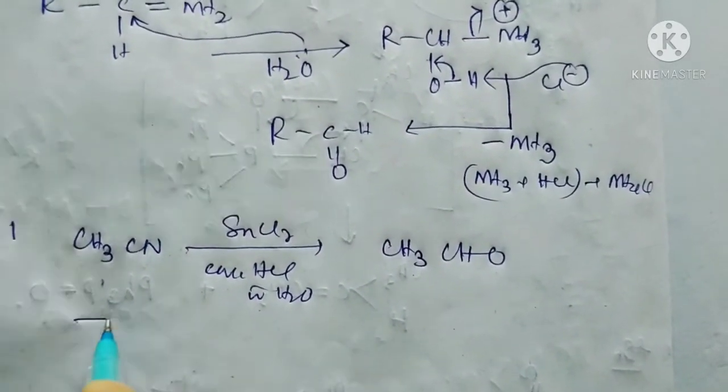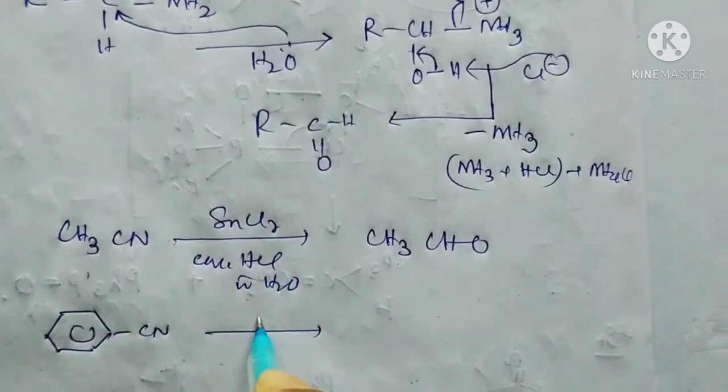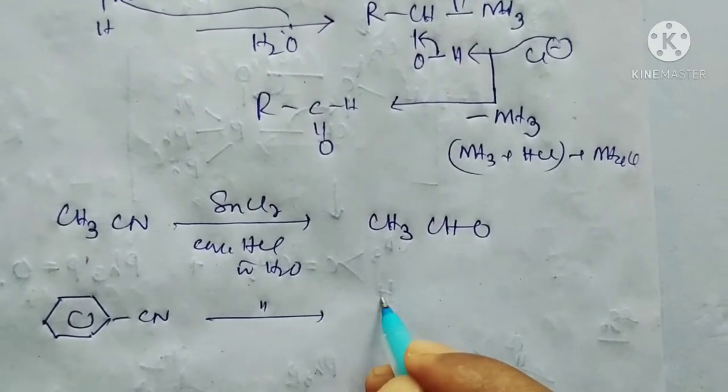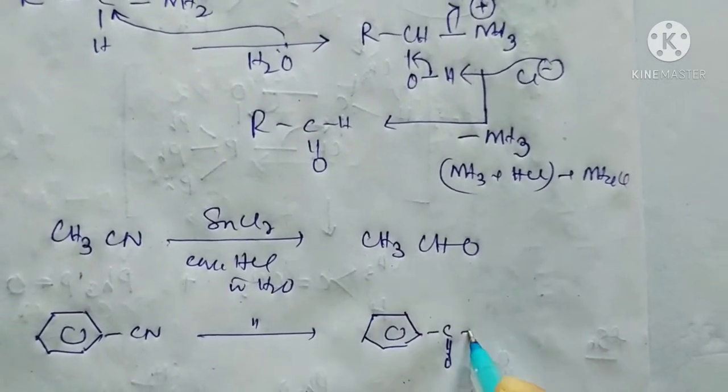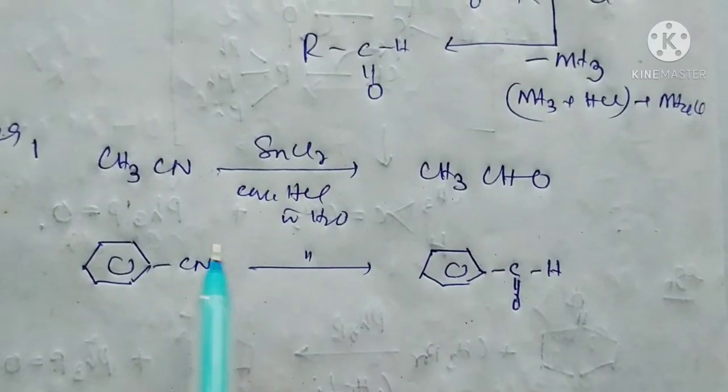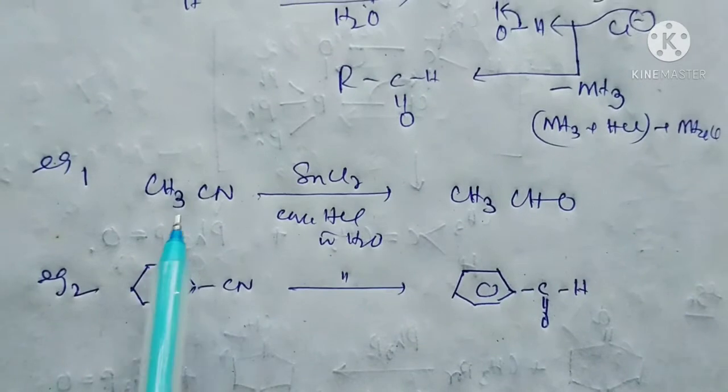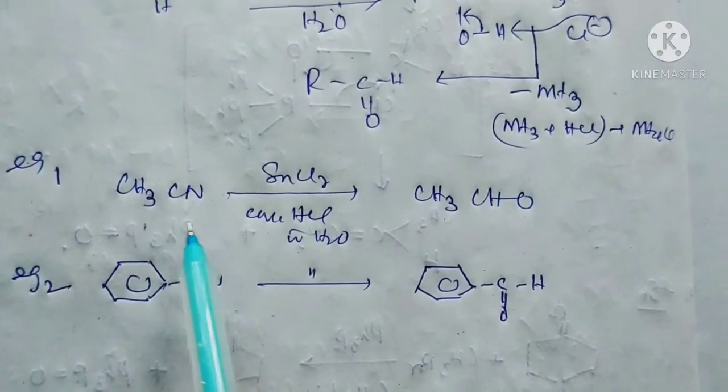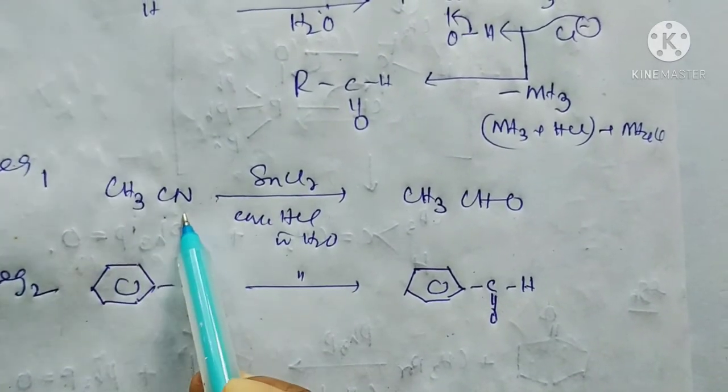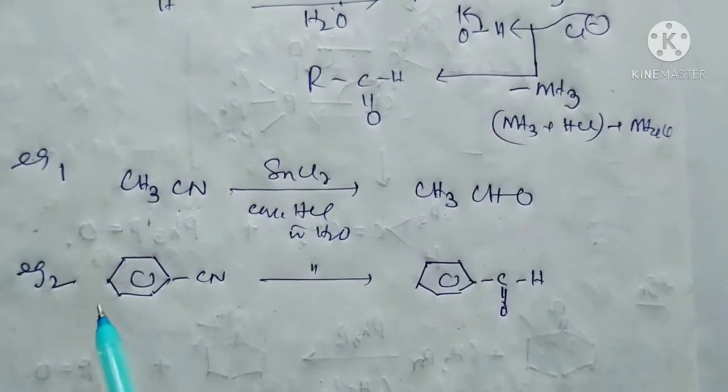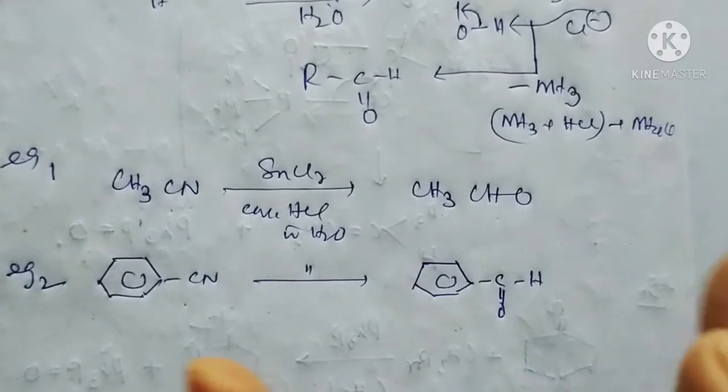And phenyl cyanide in presence of similar reactants produces benzaldehyde. So this is example number two where in first example we have made from methyl cyanide to acetaldehyde and in example number two phenyl cyanide to benzaldehyde.